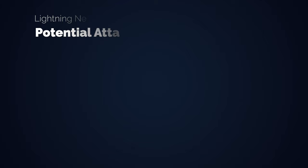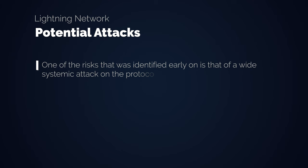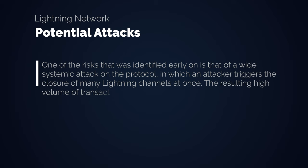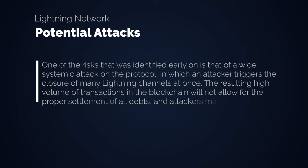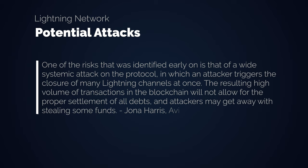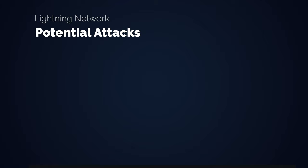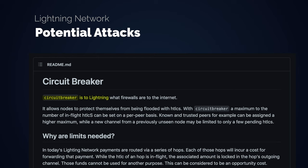Speaking of attacks specifically, there are a bunch of them, like Flood and Loot or Griefing attacks. Flood and Loot is a systemic attack where an attacker triggers the closure of many Lightning channels at once. The resulting high volume of transactions in the blockchain will not allow for the proper settlement of all debts and attackers may get away with stealing some funds. There are mitigation strategies being worked on, including Circuit Breaker, which is still in an alpha stage. Circuit Breaker is to Lightning what firewalls are to the internet — it allows nodes to protect themselves from being flooded with HTLCs by setting a maximum number of in-flight HTLCs on a per-peer basis.